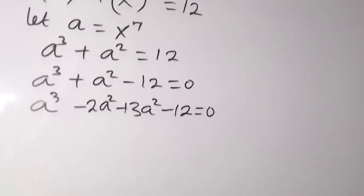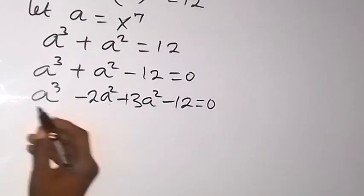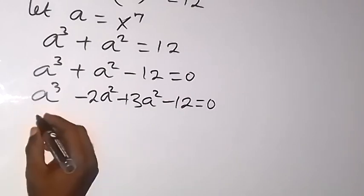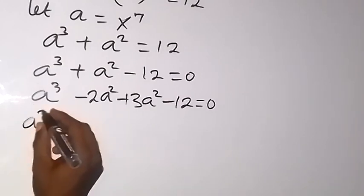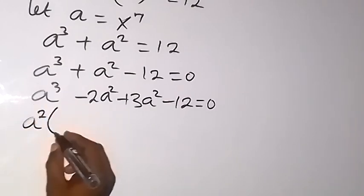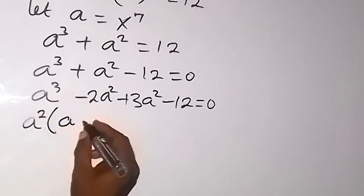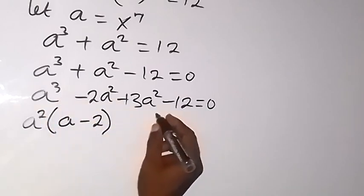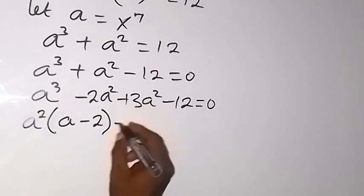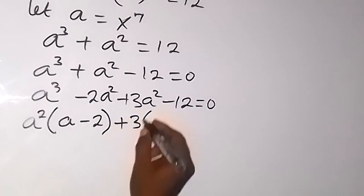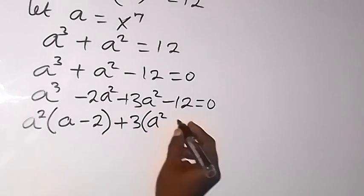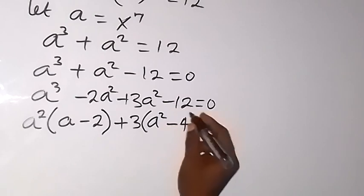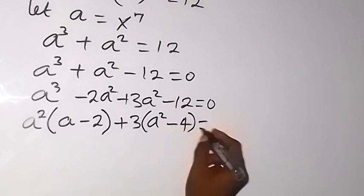We factor what is common when we group them into two pairs. What is common in the first pair is a raised to power 2, leaving a minus 2. Then what is common in the second pair is 3, giving 3 out, with a squared minus 4 left, equals 0.